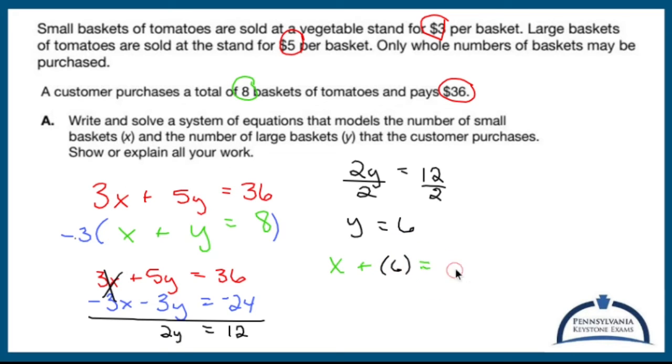So I'll rewrite this equation replacing y with 6. Subtract 6 from both sides. X equals 2, just like I knew would happen. So write and solve a system of equations that models the number. I have my system, solve for x is 2, y is 6. I get the point (2, 6).